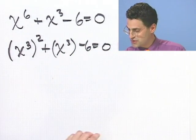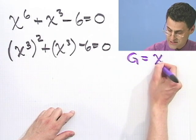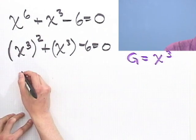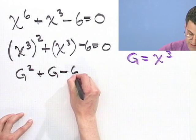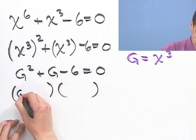So if I make a little substitution, let's let g equal x cubed, then what would I see? Well, what I see is g squared plus g minus 6 equals 0. Let's factor that equals 0.